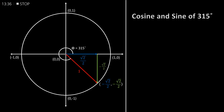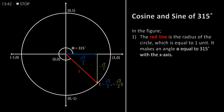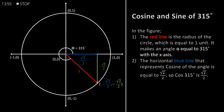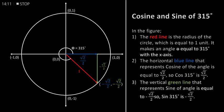Cosine and sine of 315 degrees. In the figure, the red line is the radius of the circle which is equal to 1 unit. It makes an angle theta equal to 315 degrees with the x-axis. The horizontal blue line that represents cosine of the angle is equal to half of square root of 2, so cos of 315 degrees is equal to half of square root of 2. The vertical green line that represents sine of the angle is equal to minus square root of 2 by 2, so sin of 315 degrees is equal to minus square root of 2 by 2.